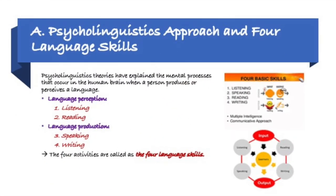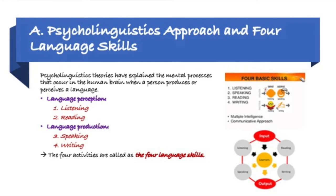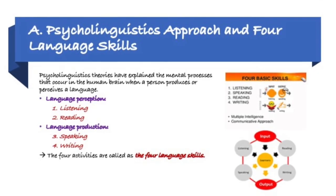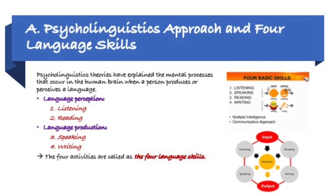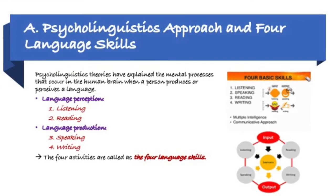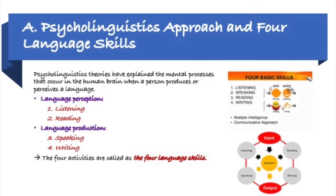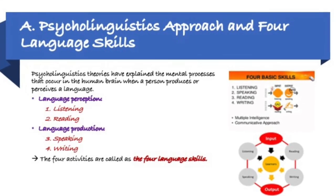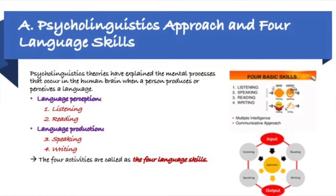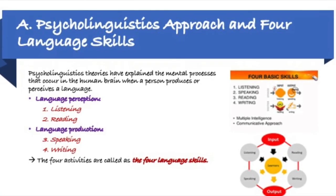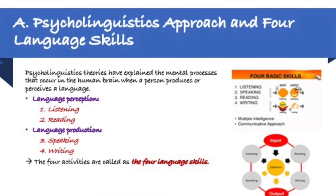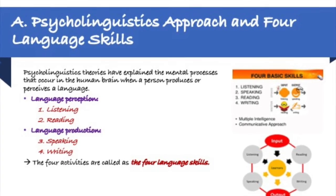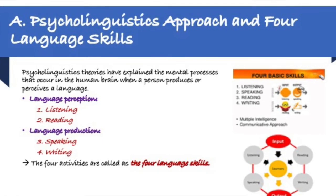Now I will explain about psycholinguistics and the four language skills. Psycholinguistics theories have explained the mental processes that occur in the human brain when a person produces or perceives language. Language perception includes the activity of listening and reading, while language production includes the activity of speaking and writing. These four activities are what is called the four language skills.